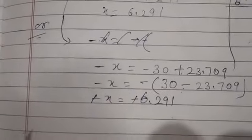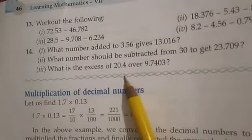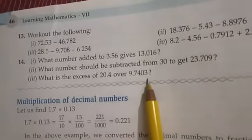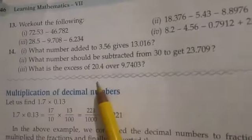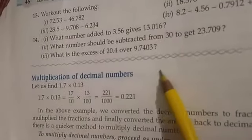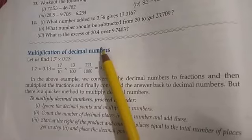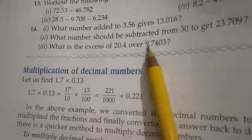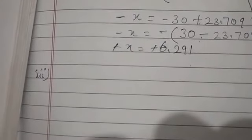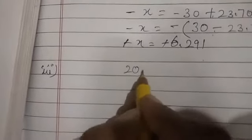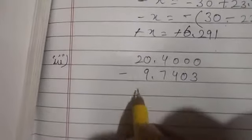Okay now part number 3. What is the excess of 20.4 over 9.7403? How much is 20.4 more than 9.7403? How will you find this value? What will we do? Subtract. We will get the value 20.4 minus 9.7403.